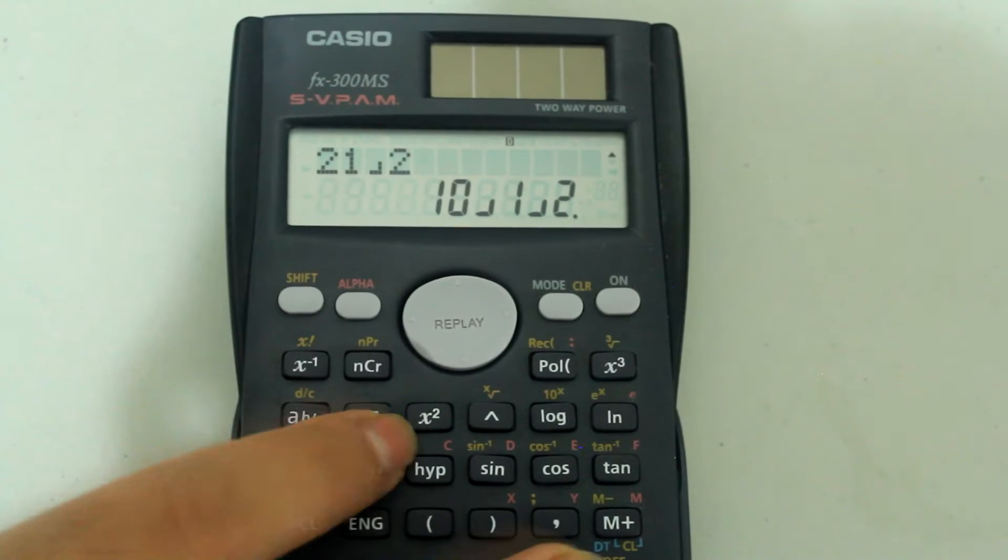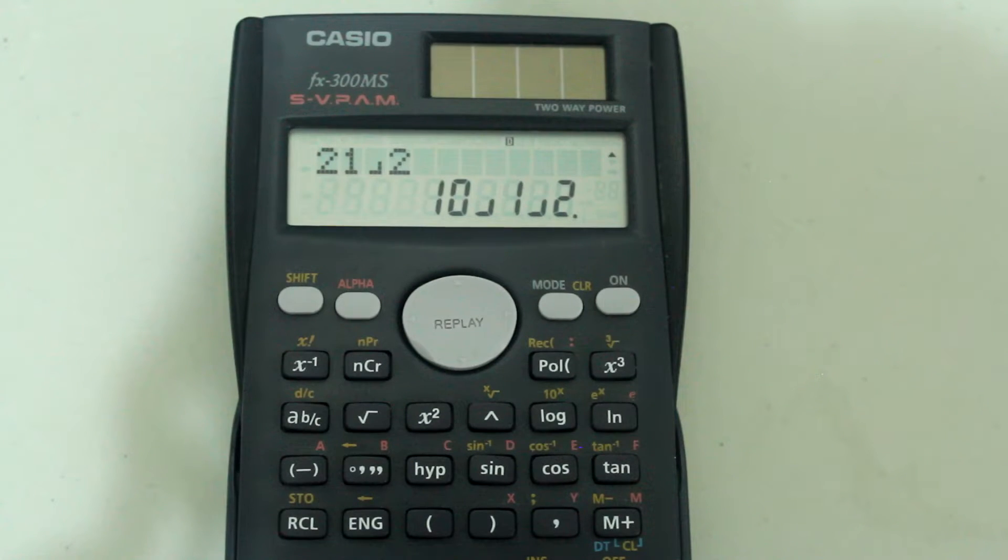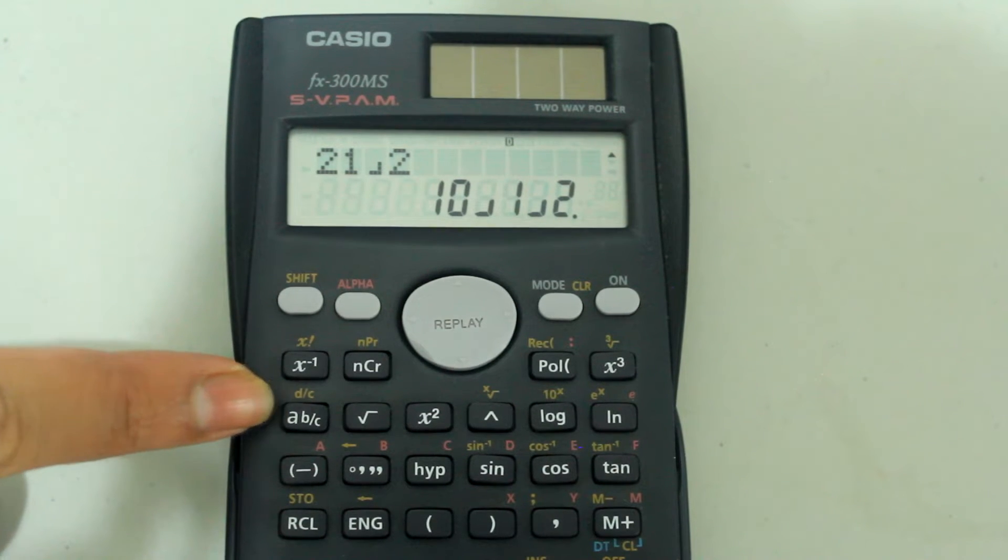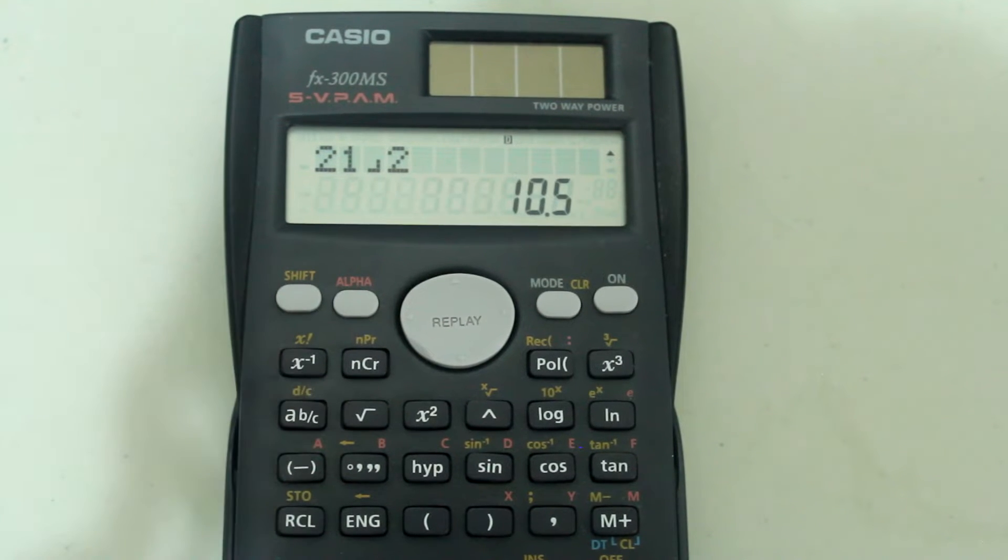Notice that the calculator returns a mixed number. There are two fraction symbols in the answer, and the first one just acts to separate the whole number, so I have 10 and 1 half. If I wanted the decimal answer, I would simply press the fraction button one more time, and I would get the decimal version.